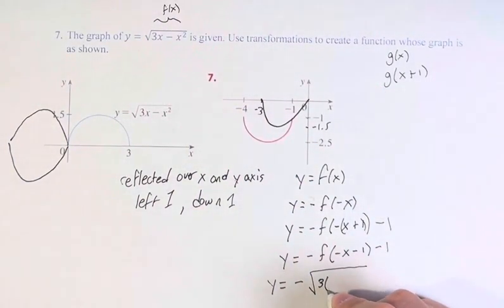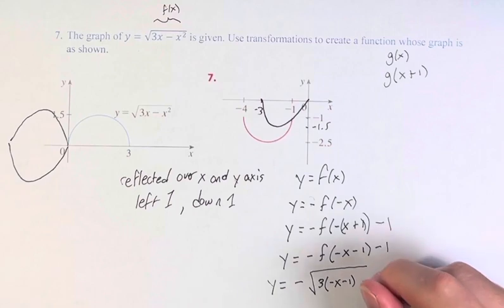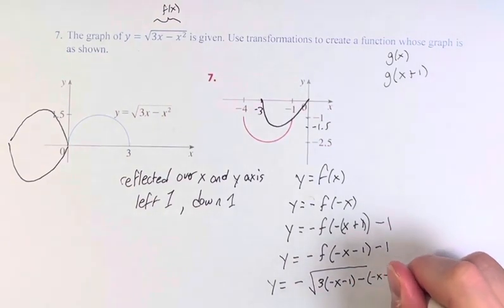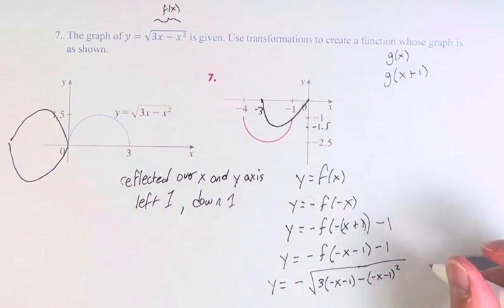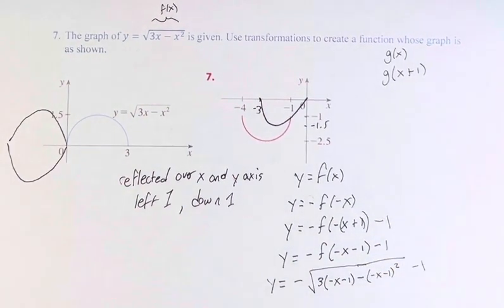Right? Instead of 3x minus x squared, we have 3 of this minus this squared. And then we do subtract 1 at the end.